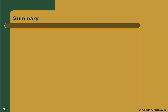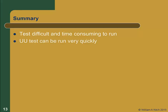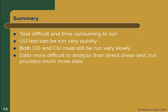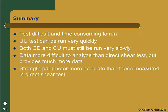Let's summarize. The triaxial test has the following characteristics: it is relatively difficult and time-consuming to run, with the exception of the UU test, which can be run very quickly. Both the CD and CU tests must be run very slowly so that shear-induced pore pressures can dissipate or equilibrate throughout the specimen. The data is more difficult to analyze than direct shear data, but we get much better information from these tests. The strength parameters measured in the triaxial test are more accurate than those measured in the direct shear test.